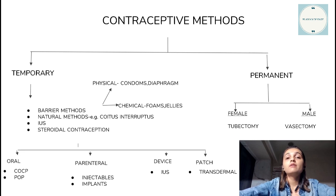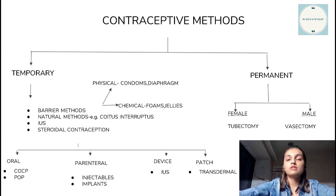The barrier methods are further divided into two classes: the physical methods and the chemical methods. The physical methods include the male condom, the female condom, the female diaphragm, and the cervical cap. The chemical barrier methods include foams and jellies, which are usually spermicidal agents like nonoxynol-9.